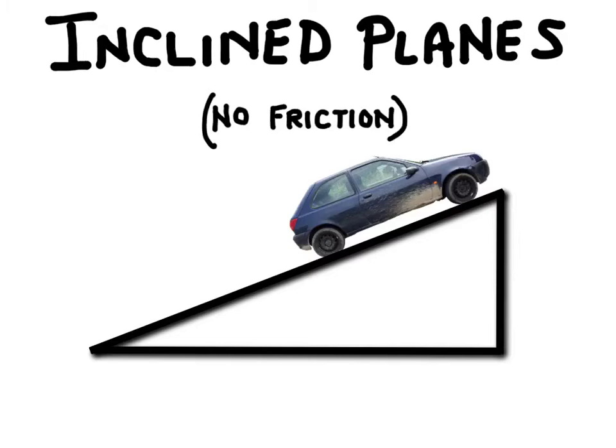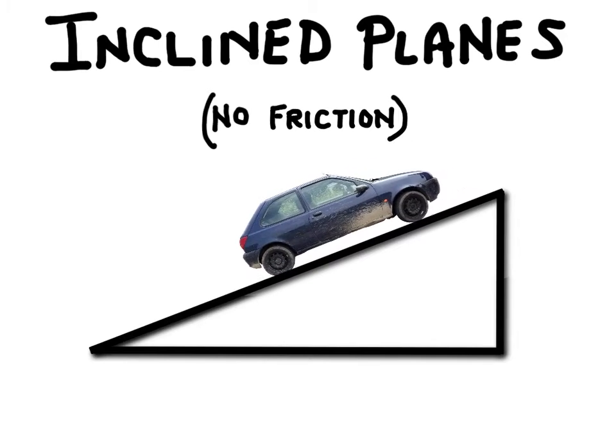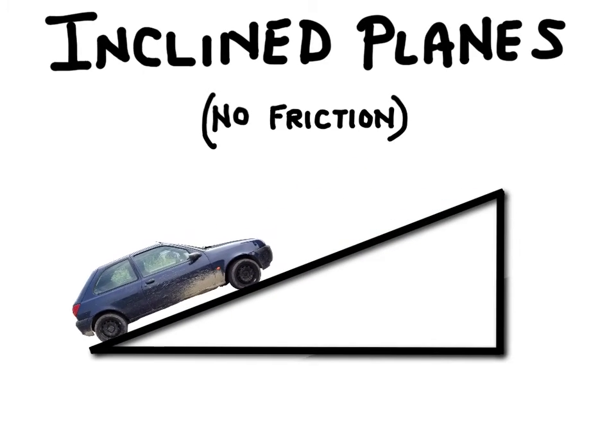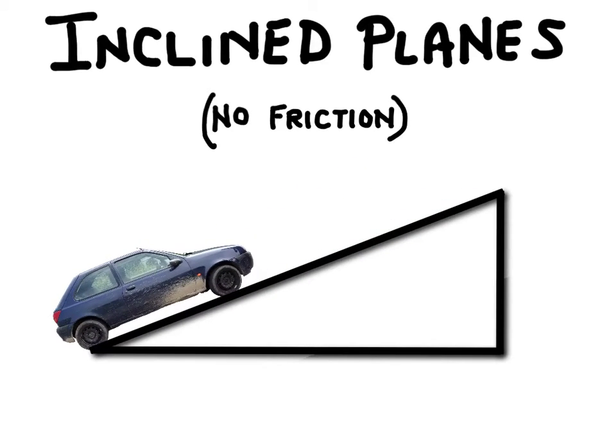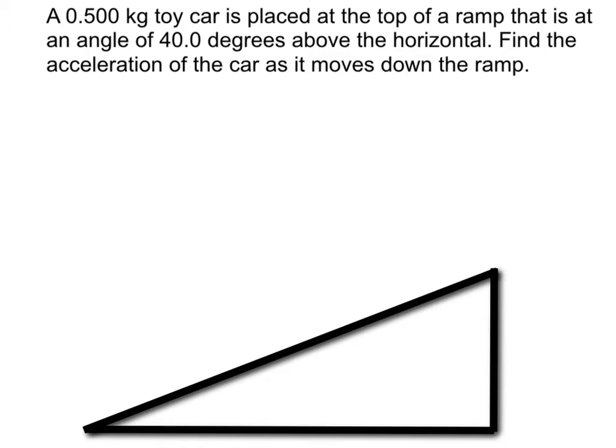For example, this car is on an incline and if this car were to shift into neutral, you can imagine what would happen - it would gradually start accelerating down this ramp. Now in this video we're going to ignore friction, so let's start with an example problem. A 0.5 kg toy car is placed at the top of a ramp that is at an angle of 40 degrees above the horizontal. Find the acceleration of the car as it moves down the ramp.